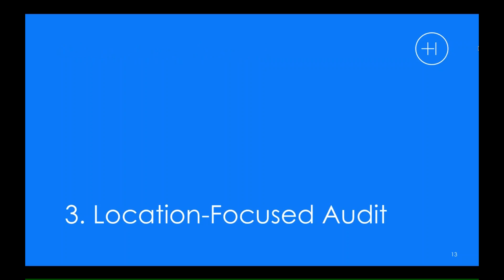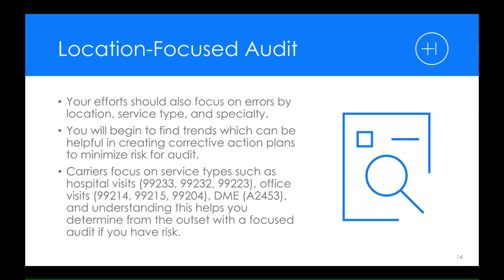Next is tip three: consideration for a location-focused audit. Your location-focused audit would focus on errors by location, service type, or specialty — what type of service is this and where would it occur? You begin here to find trends that can be helpful so that you can develop action plans related to minimizing that risk. You don't ever totally get rid of risk, but you can minimize it and determine what the threshold of that risk is and whether it's acceptable. Carriers focus on service types such as hospital visits, office visits, and DME items. Understanding all of that helps you know where to focus your own audit.